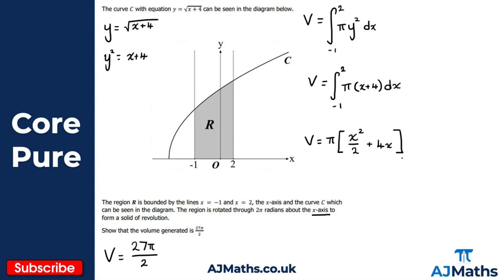We substitute the limits, starting with the upper limit and subtracting the lower limit. For the upper limit x = 2: 2²/2 = 2, plus 4×2 = 8, giving 10. For the lower limit x = -1, I'll put it in brackets to avoid sign errors: (-1)²/2 = 1/2, plus 4×(-1) = -4. So that's 1/2 - 4 = -7/2.